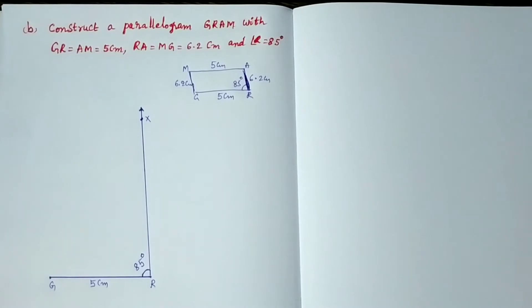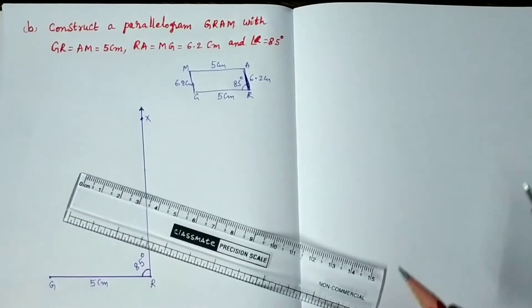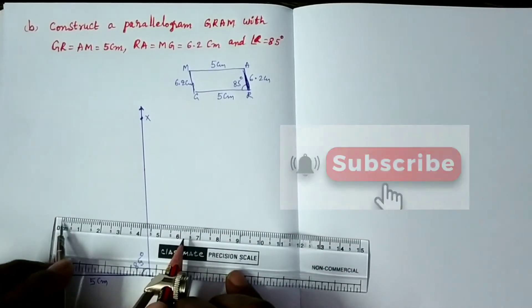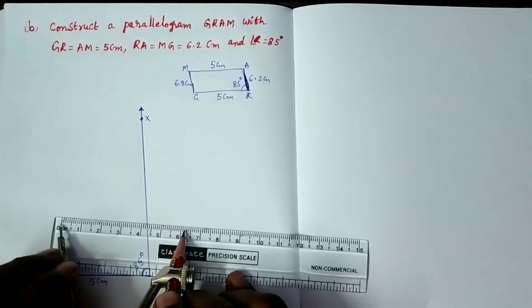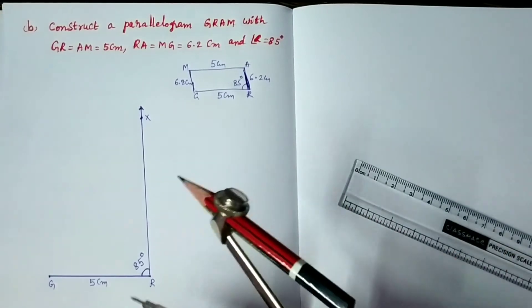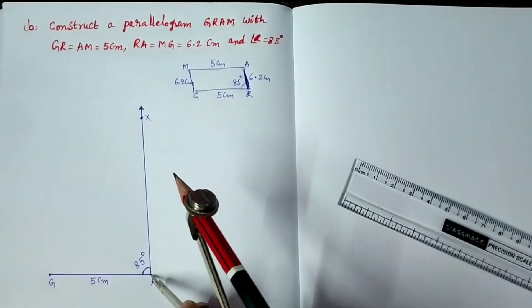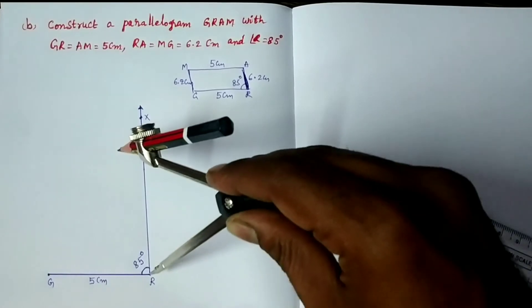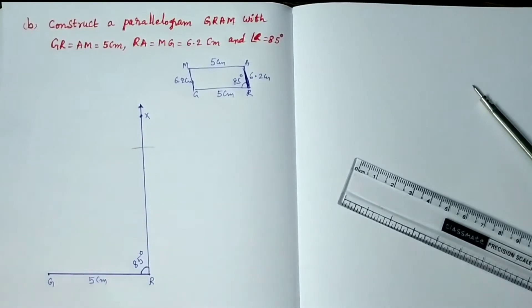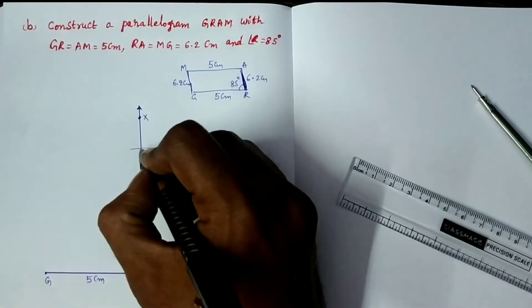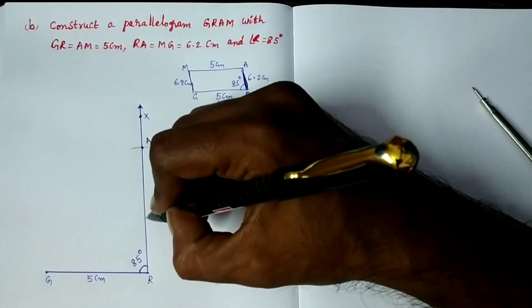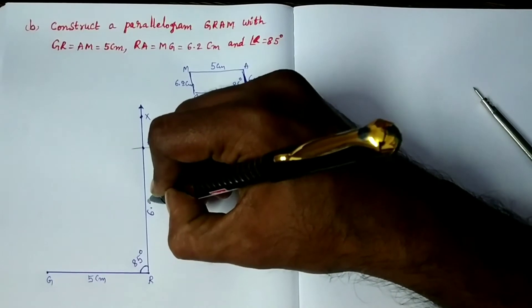Draw a ray Rx. Take 6.2 centimeters with compass. This is 0 and this is 6.2, so take R as center and 6.2 as radius, draw an arc. It cuts the ray Rx at A. So this is the vertex A, and this length RA equals 6.2 centimeters.